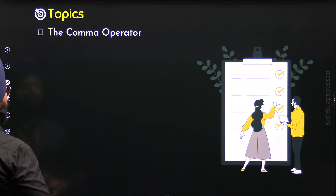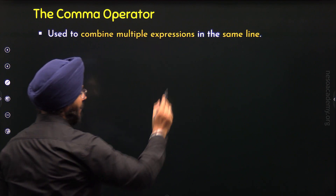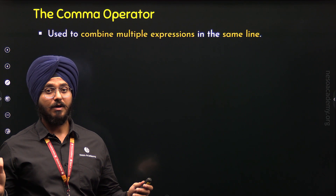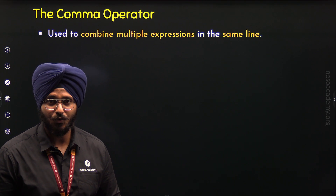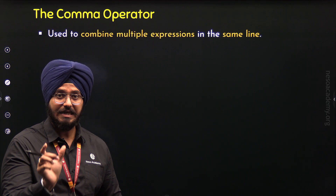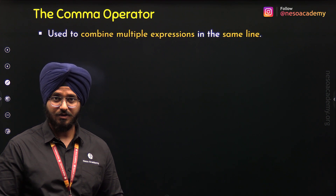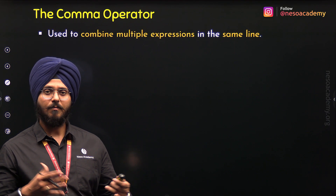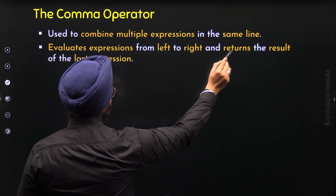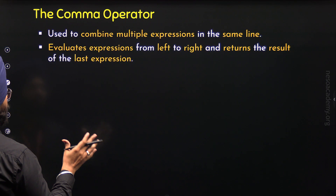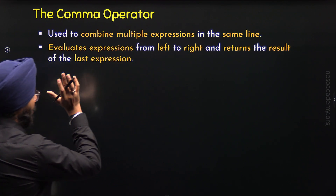The comma operator is used to combine multiple expressions in the same line. By expression, I mean something that evaluates down to a value — an expression always gives us a value in return. Apart from this, the comma operator evaluates expressions from left to right and returns the result of the last expression.